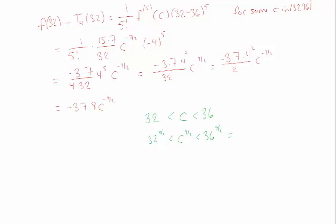So 36 to the 9 halves, that's just 6 to the 9. That's a reasonable number. I can't take the square root of 32, but something less than 32 I can take the square root of is 25. So this looks like 5 to the 9. In fact, these are equal.